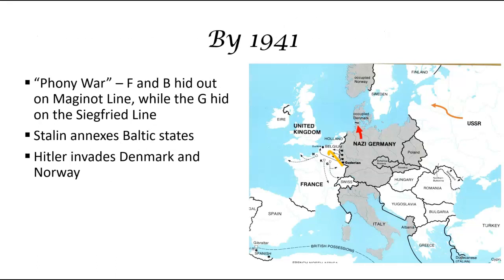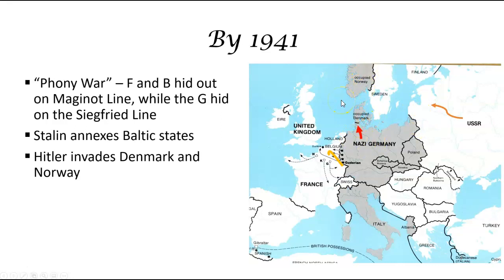By 1941, we have a phony war where France and Britain hide out on what's called the Maginot Line, that yellow line on the map. Germany hides on what's called the Siegfried Line, and Stalin is going to annex all the Baltic states created after World War I — Latvia, Lithuania, and Estonia. Hitler is going to occupy Denmark and Norway, and things are just kind of sitting.